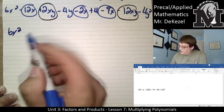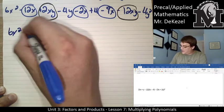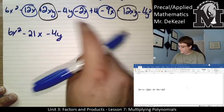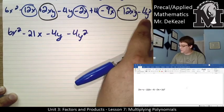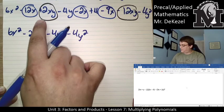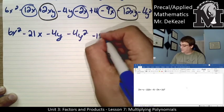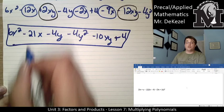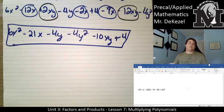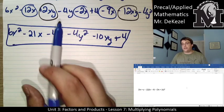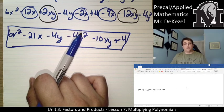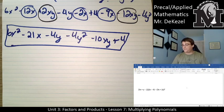6x squared minus 12x minus 9x squared, so that's minus 3x squared. Minus 4y for that term. Minus 4y squared for this term. Let's see. We've got 2xy minus 12xy, that's minus 10xy, and then plus 4. So any order in which you write those would be totally fine. But that is the answer that we're looking for for expanding and simplifying the problem given. Again, if you have any questions, please let me know. I hope to see you soon.